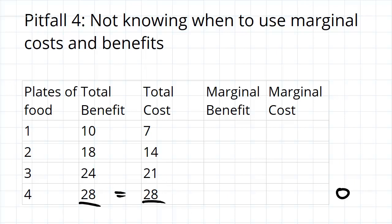This is the wrong way of thinking about it. Instead, you want to say, starting off with zero, do I want to get one plate of food? So you want to look at the marginal benefit and marginal cost of getting one plate of food. The marginal benefit or cost is the benefit or cost from going from one less to the current amount. Going from zero to one, I have to pay seven — that's my marginal cost — and I get a benefit of 10 out of it.